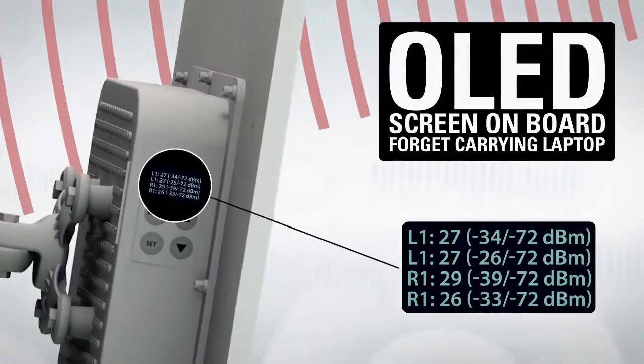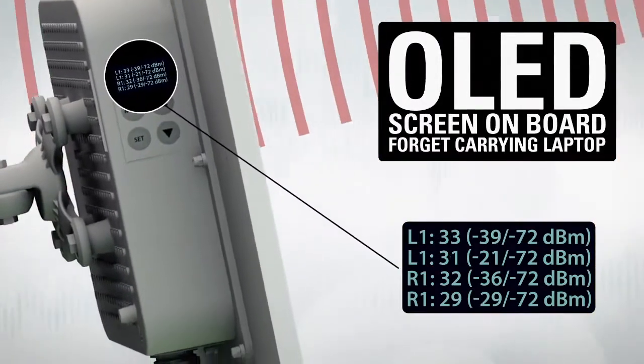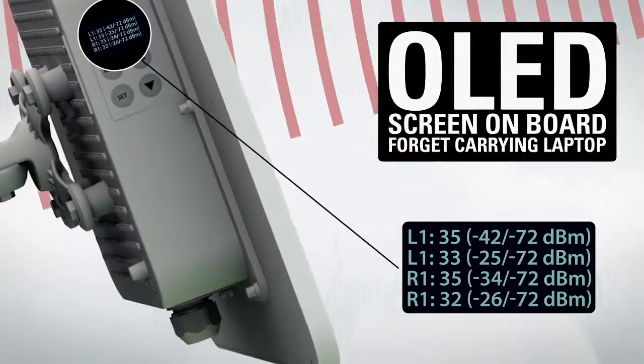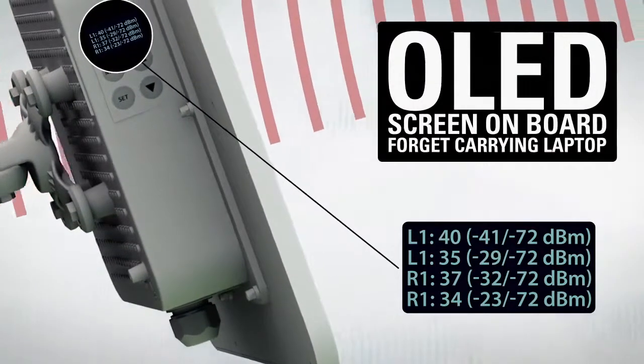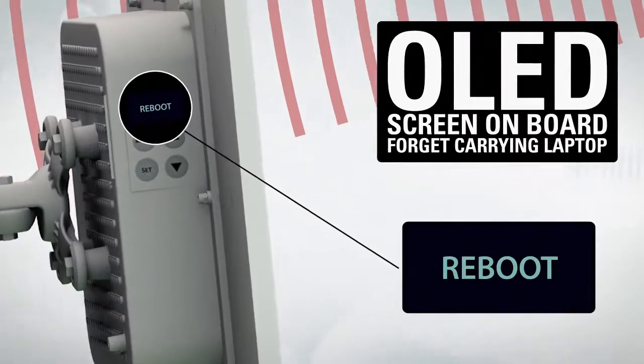It shows both local and remote side RSSI levels. After aligning the antenna, you can also run a link test, review basic configuration, reset the unit to defaults, or reboot it using the same OLED screen.